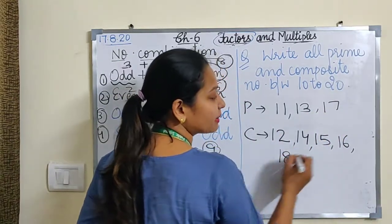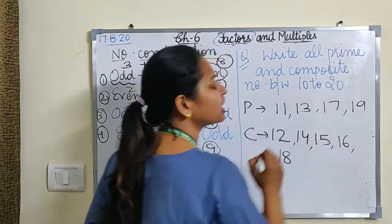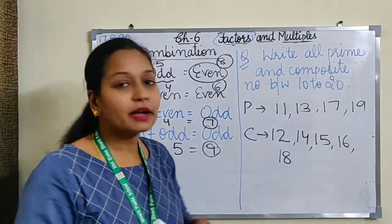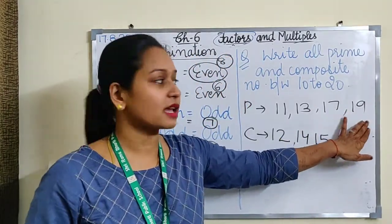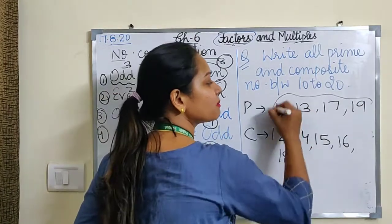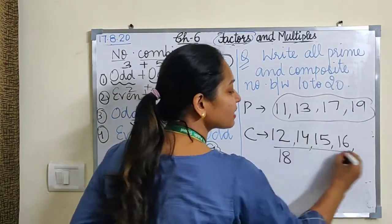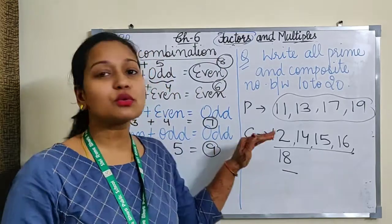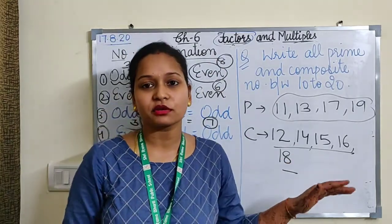18 is also coming in many tables. And 19 is also not coming in any table rather than 1 or the number 19 itself. So these are the few prime numbers between 10 to 20, and these are some composite numbers. This way you have to do questions of prime number and composite number.